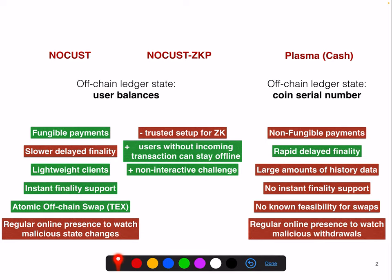NoCast allows you to encode user balances in an off-chain ledger. You have fungible payments. The disadvantage is that you have slower, delayed finality. You have a quite lightweight client — the clients don't have to hold much data. You get instant finality support if you collateralize an insurance pool, which is expensive, and you can perform off-chain atomic swaps.